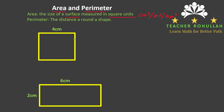Perimeter is the distance around a shape. The units of perimeter are units of length like centimeter, meter, millimeter, inch, and so on — any units of length can be used. Similarly, any squared units can be used to show the area of a shape.